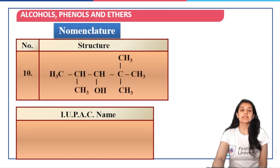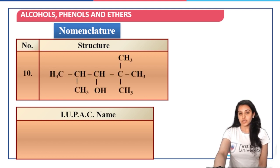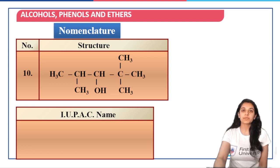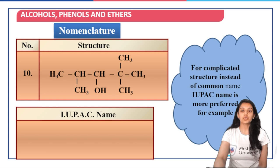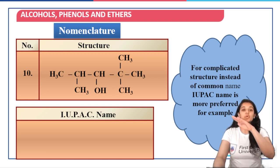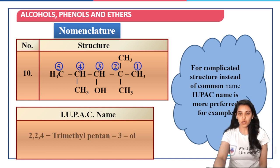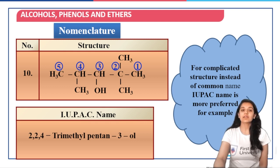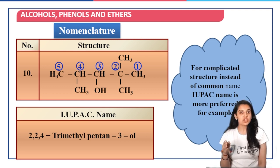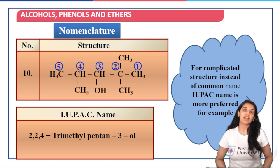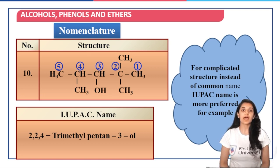For larger structures there are no common names — all you have to do is predict the IUPAC names. What you have to do is choose the parent chain first, number it, then name the positions where substituents are present in alphabetical order. So it's going to be 2,2,4-trimethylpentane-3-ol.